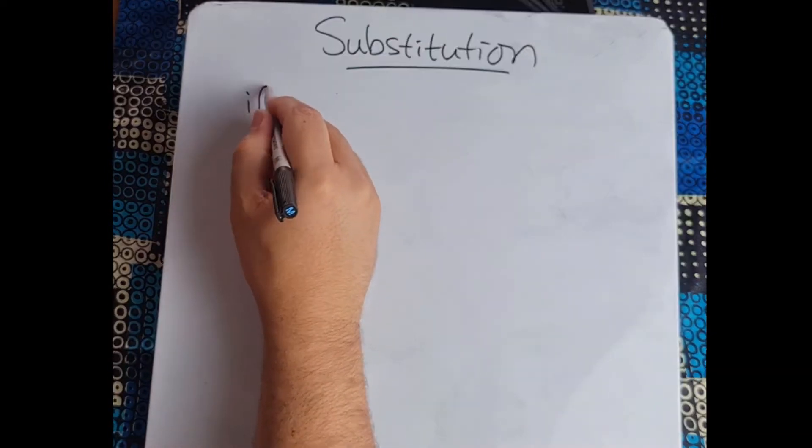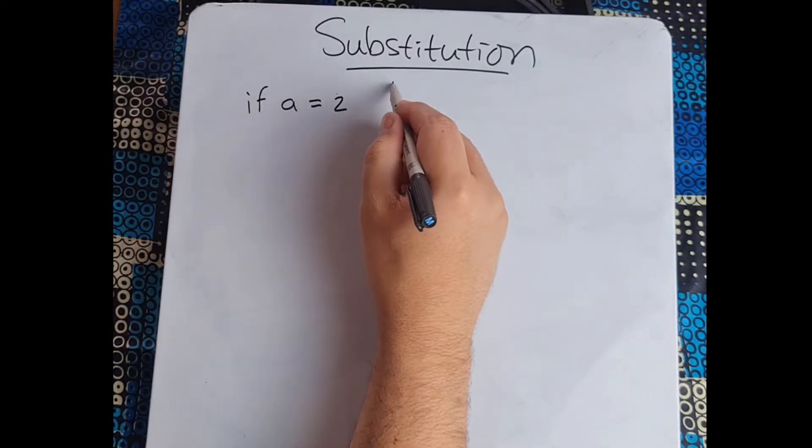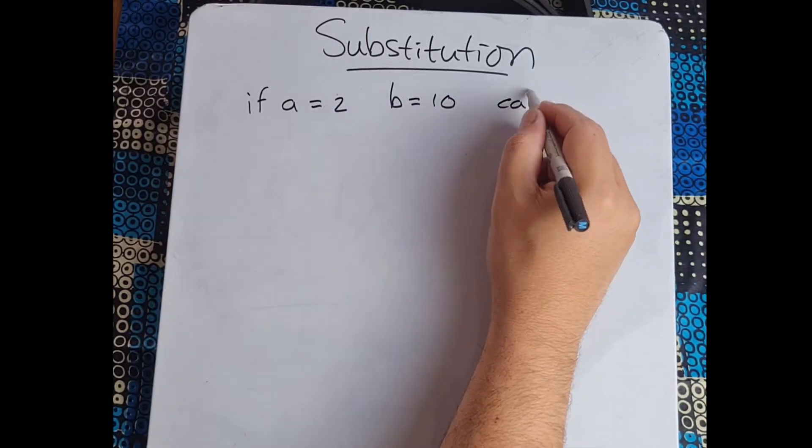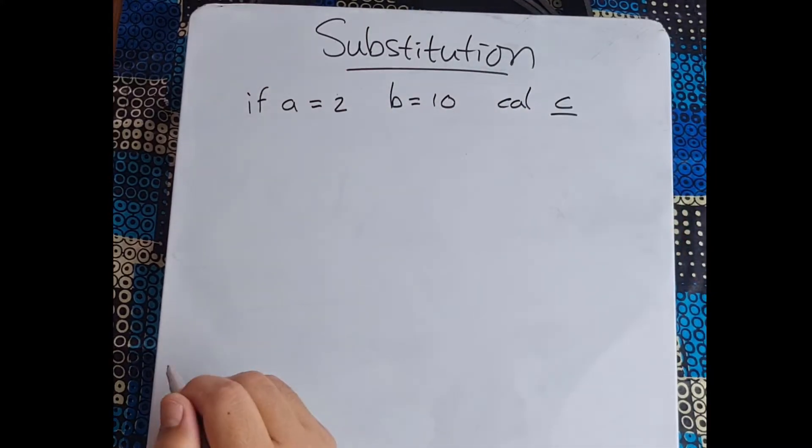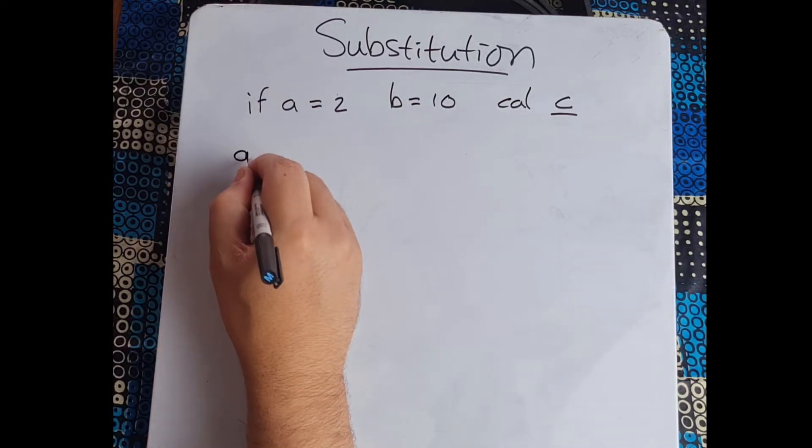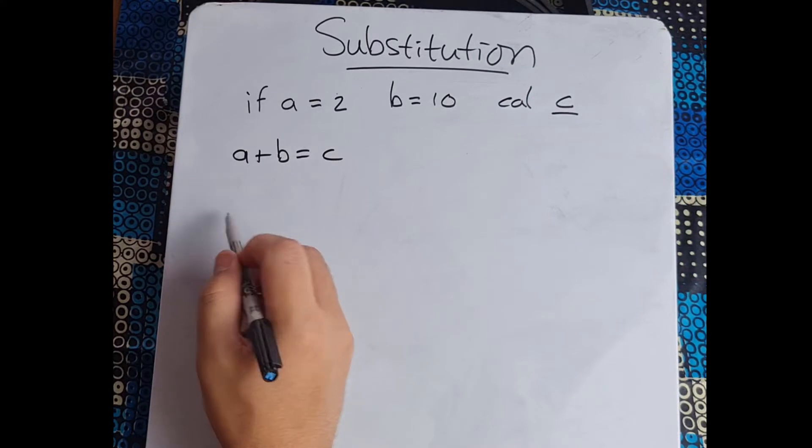So they'll usually give you something like this: if a equals 2 and b equals 10, then they want you to calculate c. All right, so we usually start off with something simple like a plus b equals c.